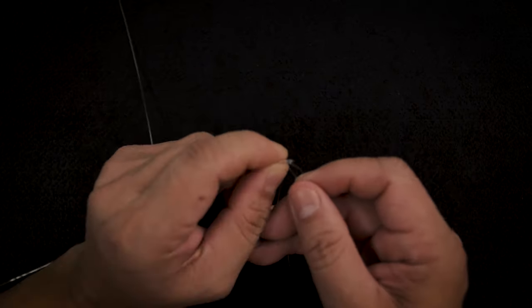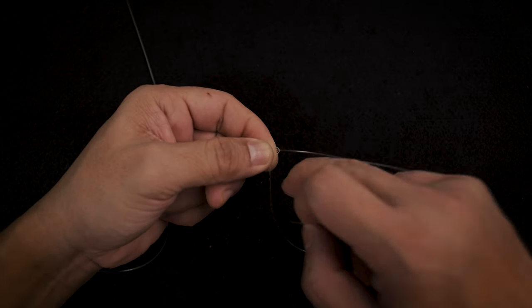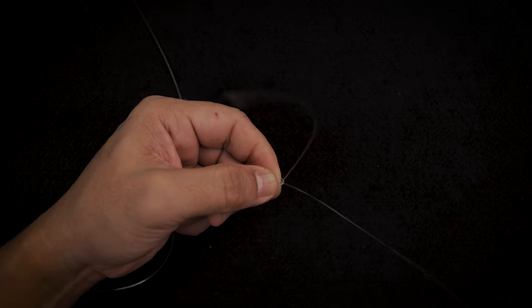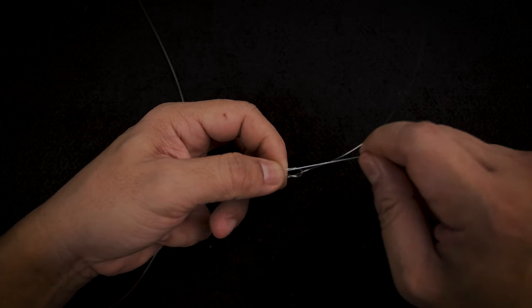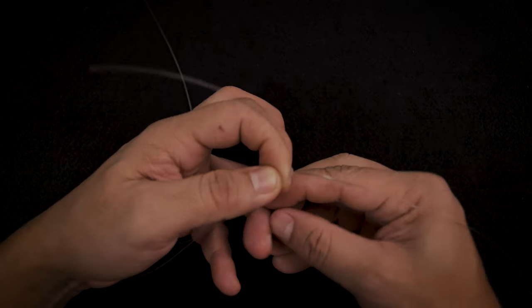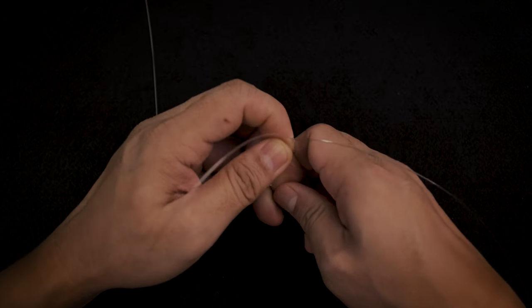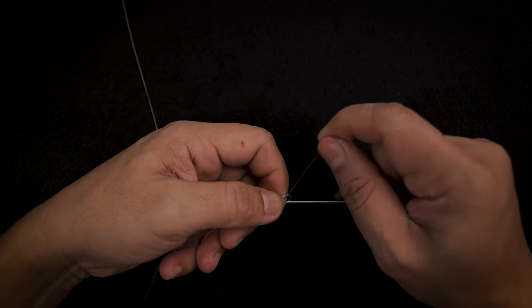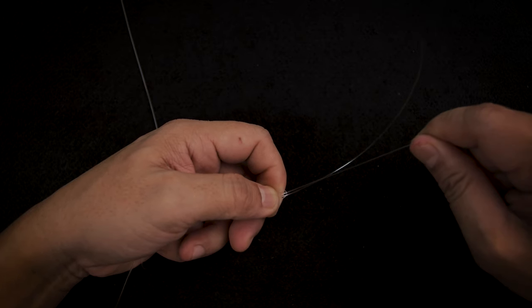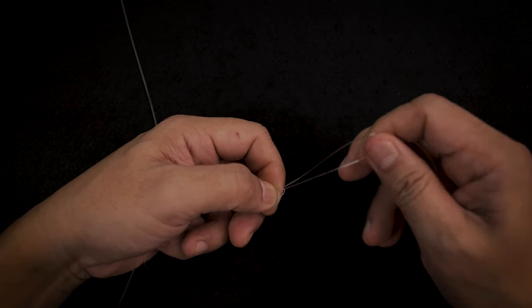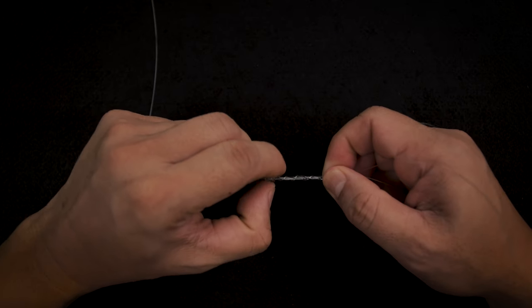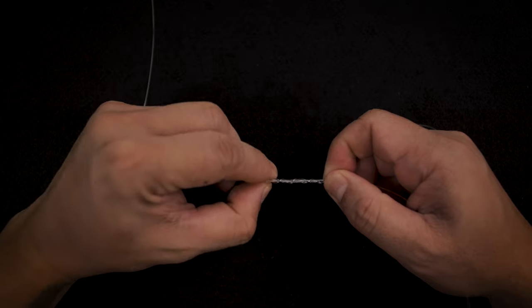Now remember we push down, now we push up, and then we pull this part here. Make sure that it's at the back. We pull that part so that all the loops form at the back. Make sure that they're evenly spaced out.